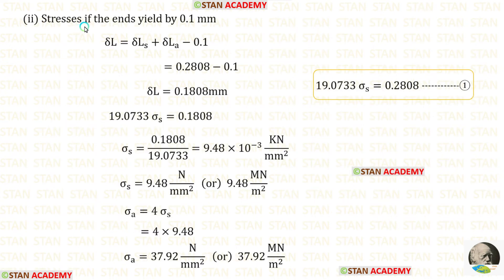Now let us find the stresses if the ends yield by 0.1 millimeter. Now we have new change in length delta L which is equal to delta L_S plus delta L_A minus 0.1. We know that delta L_S plus delta L_A is equal to 0.2808. Finally for delta L, we are getting this.